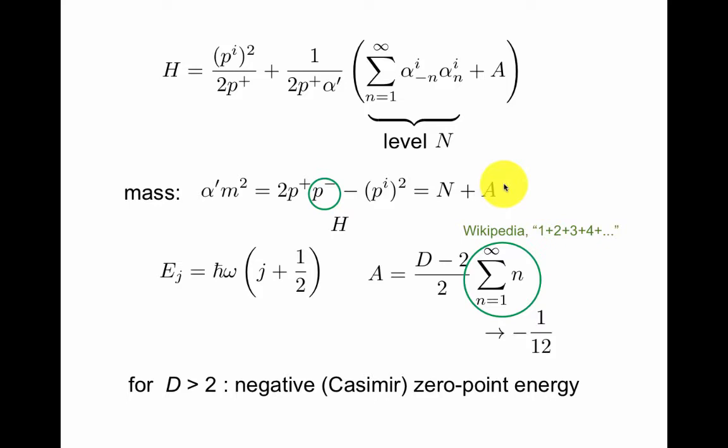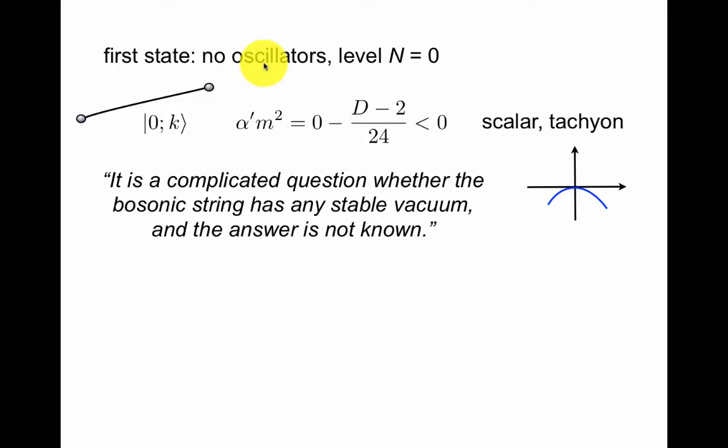So let's start with the first state where we haven't canceled it. We have no oscillators. That means you have a negative energy. This state is a scalar. It has no space-time index i. So it's called a tachyon. A tachyon is something that travels faster than the speed of light, or more physically, it has a negative potential. The mass is, of course, the second derivative of the scalar potential. So having a negative mass means being unstable like this. This is a quote from Polchinski: It's a complicated question whether the bosonic string has any stable vacuum. And the answer is not known.